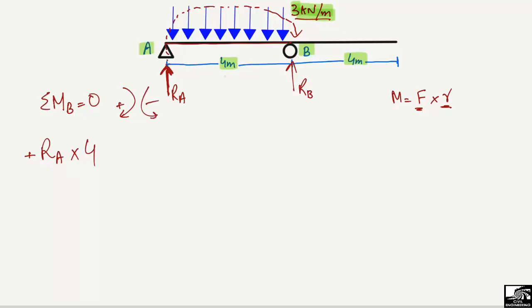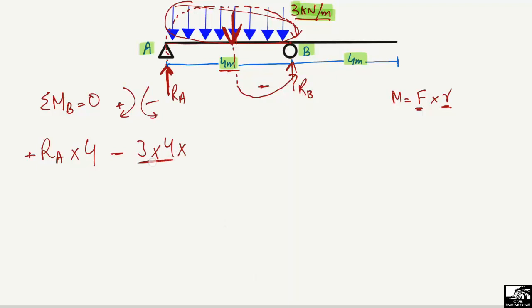The UDL of 3 kilonewton per meter acts downward, so we convert it to a point load. The total load equals 3 kilonewton per meter multiplied by 4 meters, which gives 12 kilonewtons. This equivalent point load acts at the center of the distributed span, which is 4 divided by 2, giving a moment arm of 2 meters from point B. Since it acts downward, it creates a counterclockwise moment and is negative: minus 3 times 4 times 2.